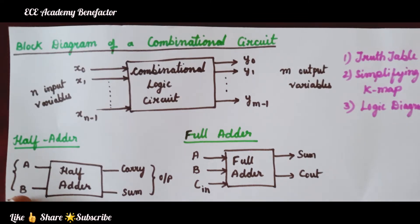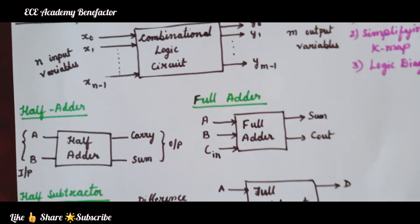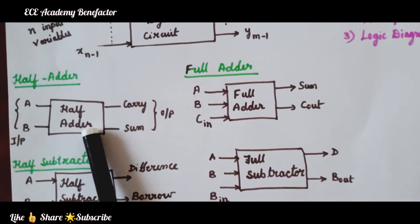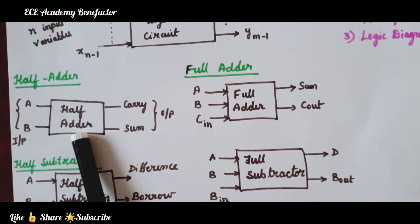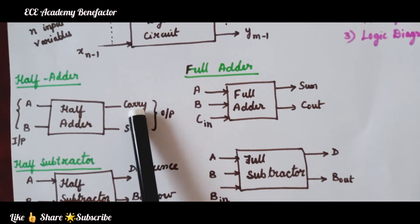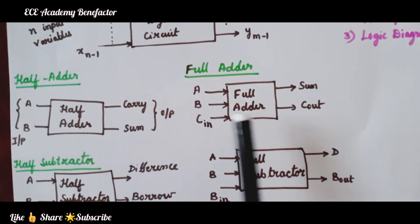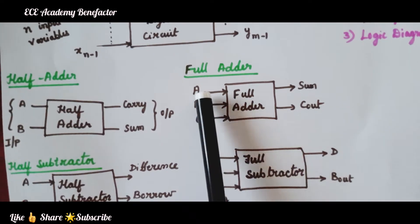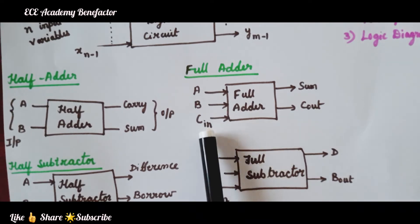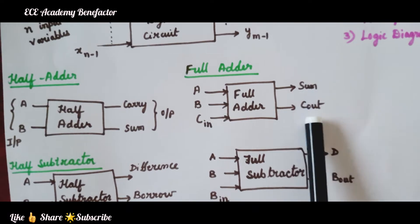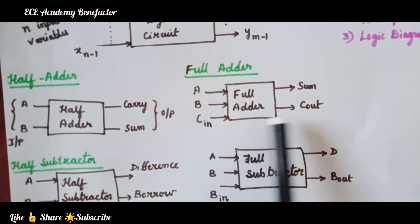Let us now see what are the different combinational logic circuits. The first one is the half adder. As the name suggests, the adder performs binary addition. A half adder has two inputs, A and B, and two outputs: sum and carry. The next combinational circuit is the full adder. It has three inputs — A, B, and carry-in — and two outputs: sum and carry-out.